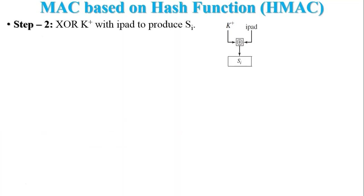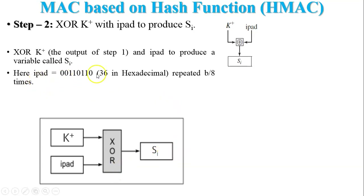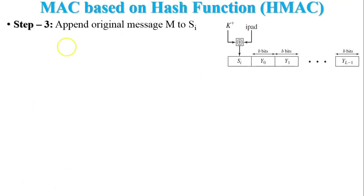Step 2: XOR K+ with ipad to produce Si. Here K+ is the secret value selected by the user, and ipad is a fixed constant value. Si is calculated from K+ XOR ipad — this is the first inner secret value. The value of ipad is 0x36 in hexadecimal, as fixed by the algorithm. So our equation is: K+ XOR ipad = Si.